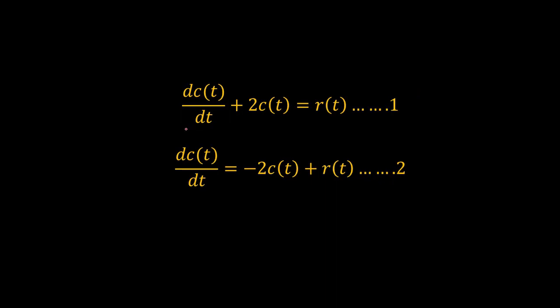Before starting the implementation, we will rearrange the first order differential equation using the rule that the highest derivative of the equation will be left on one side, where all remaining terms will be moved to the other side. Using this rule, dc(t)/dt will be on one side and all other terms will be moved to the other side, as shown in equation 2.